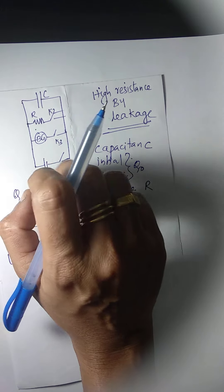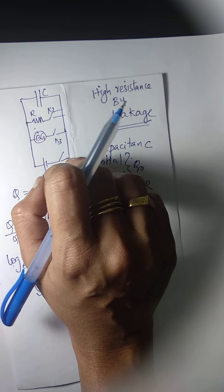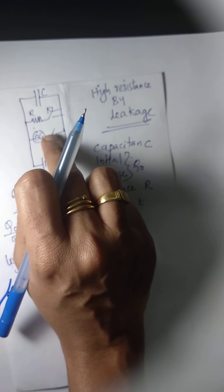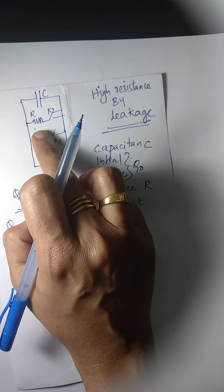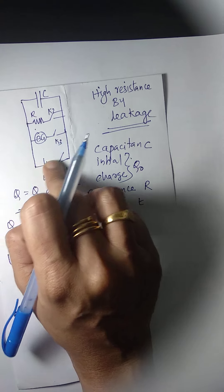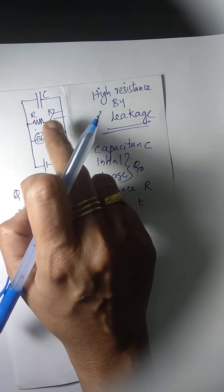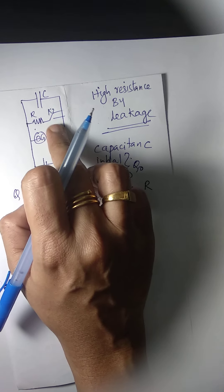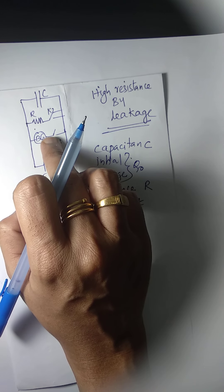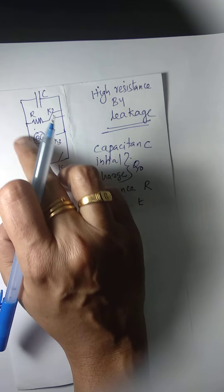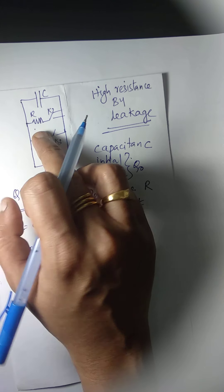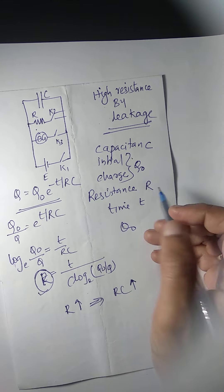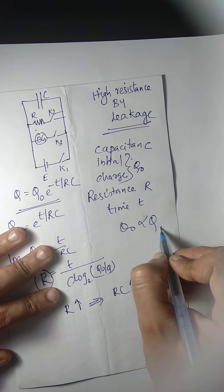In the next step, K1 is opened and K3 is closed, keeping K2 open. The capacitor starts discharging through the galvanometer, which records a deflection theta 0. This theta 0 is proportional to Q0, the initial maximum charge.